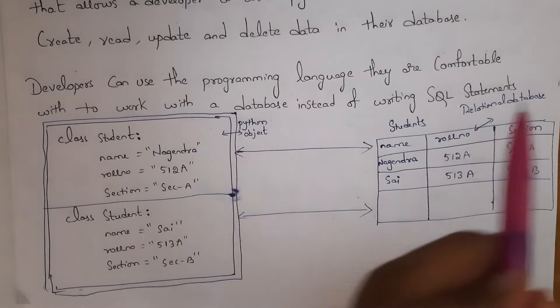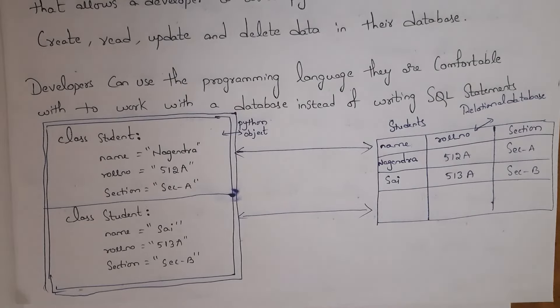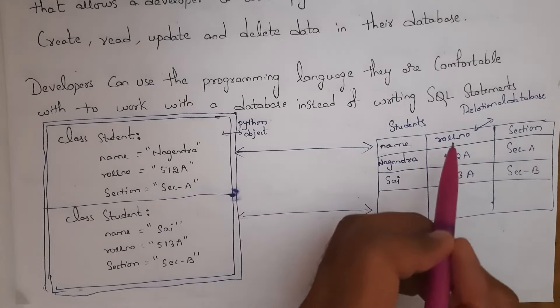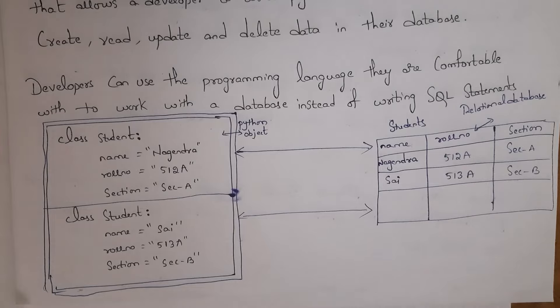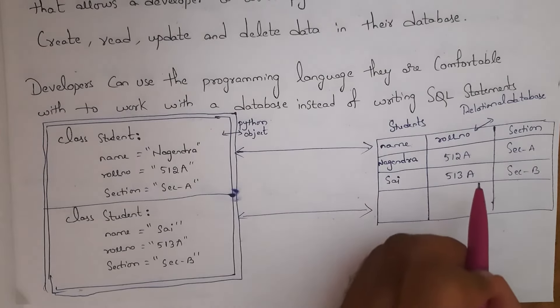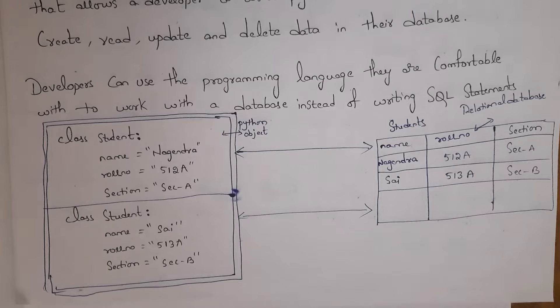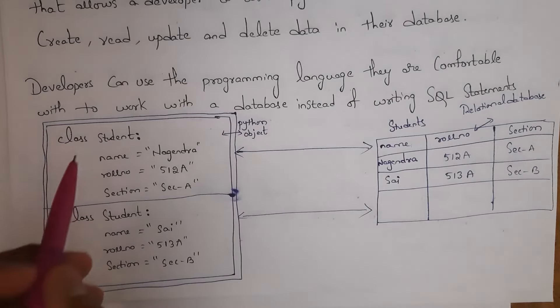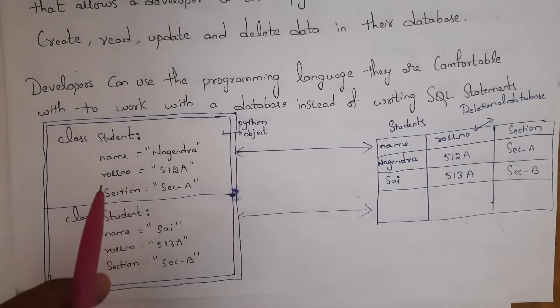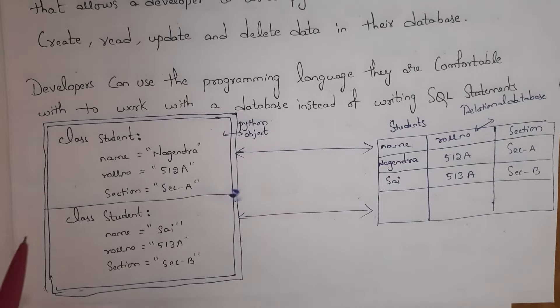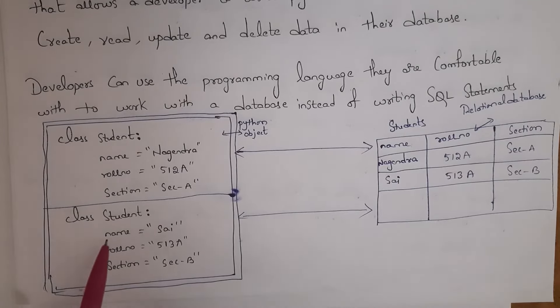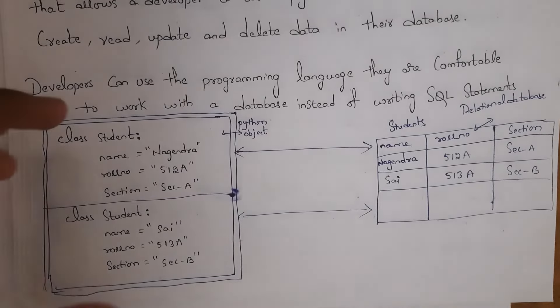For example, using a Python object we are creating a relational database. Inside a students table, I want to insert name Nagendra, roll number 512A, and section A. Similarly, I want to insert name Sai, roll number 513A, and section B. In Python code, you take a class — class Student — and define each record this way. This is a simple example of creating a relational database using Python code.